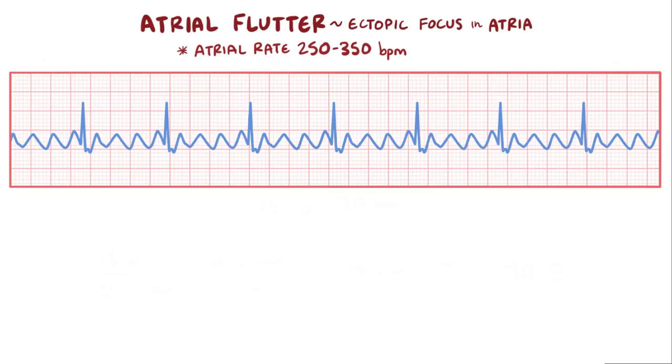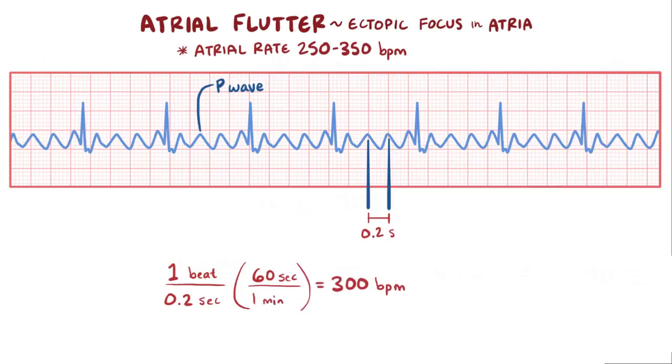To calculate the atrial rate, you can use the same methods as before, except you look at P waves instead of R waves. If one P wave starts on a heavy line, and the next P wave starts on the next heavy line, or 0.2 seconds later, then again you've got one beat for every 0.2 seconds, and multiplying by 60 seconds in a minute you get 300 beats per minute. You can also remember that nifty trick where one big box is equal to 300 beats per minute.